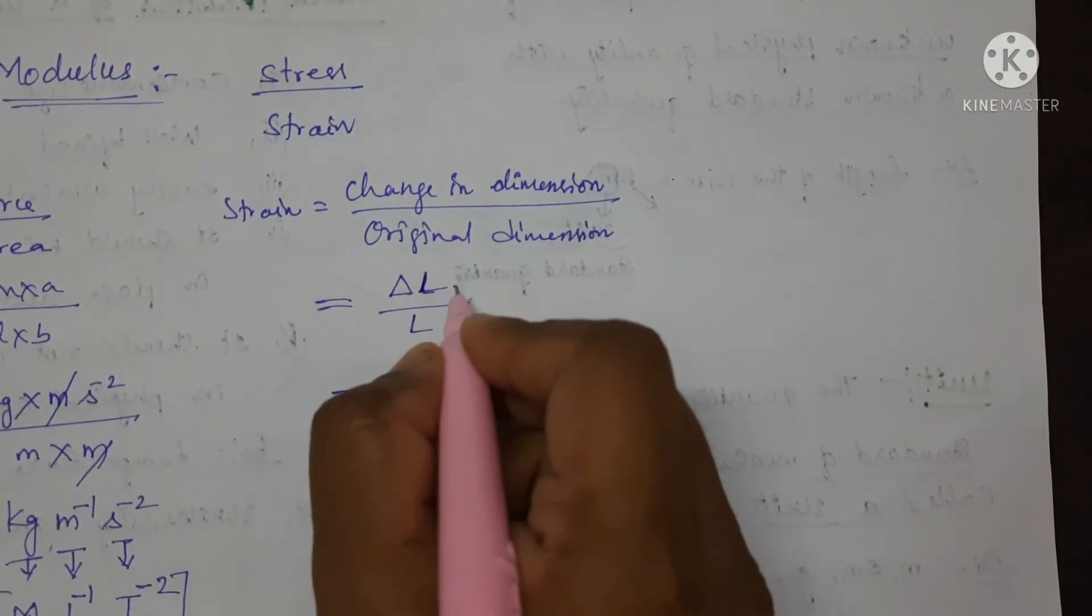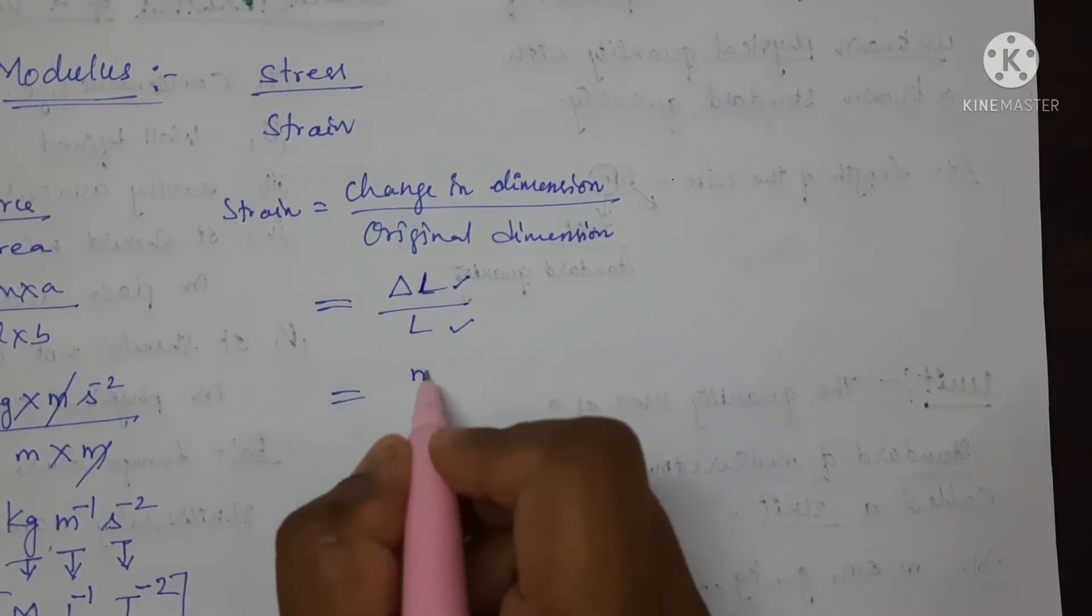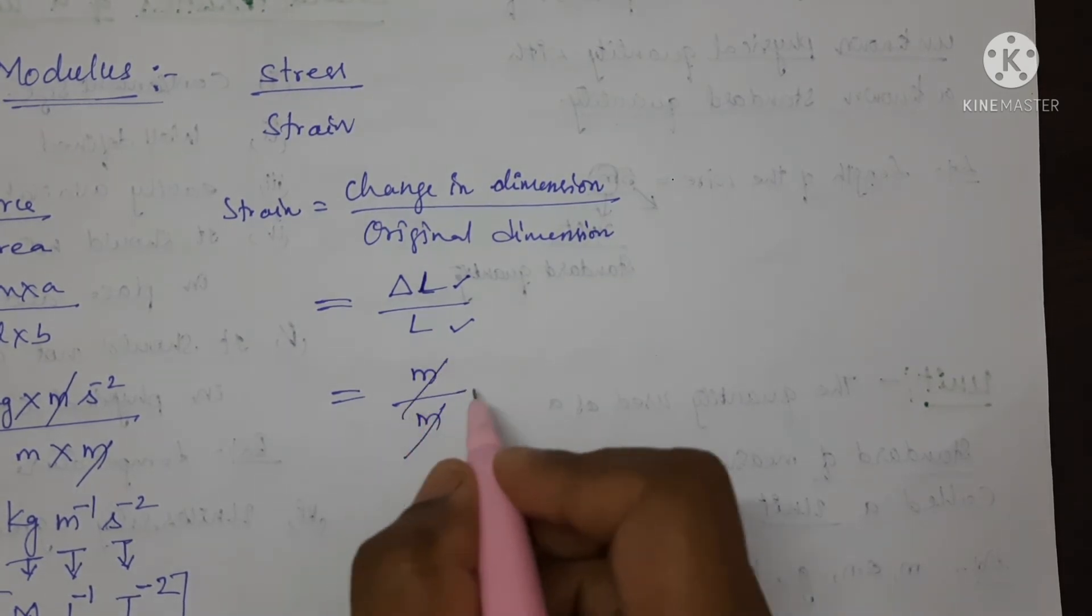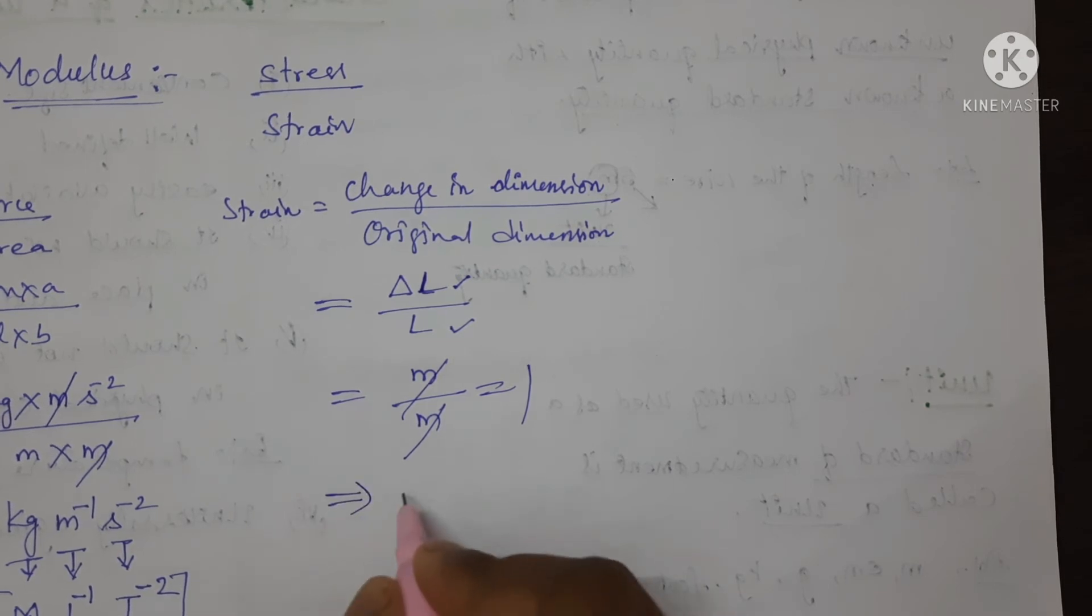So, change in length upon original length. And SI unit for the length is meter and for length is also meter. Both will get cancelled. And the remaining is 1. That means, strain is a dimensionless quantity.